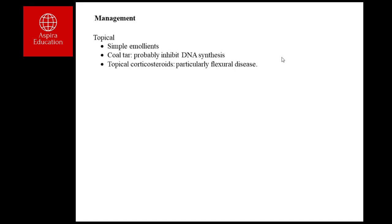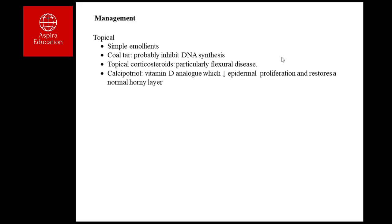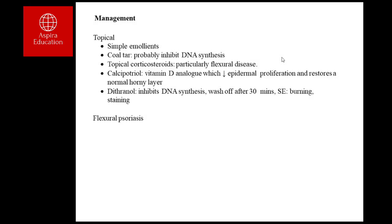Topical steroids are used, especially for flexural areas such as the elbow, axilla, and groin. Calcipotriol, a vitamin D analogue, decreases epidermal proliferation and restores the normal skin layer. Dithranol is another agent that inhibits DNA synthesis; it must be washed off after 30 minutes, and its side effects include burning and staining. Topical preparations often combine a corticosteroid, coal tar, and calcipotriol.